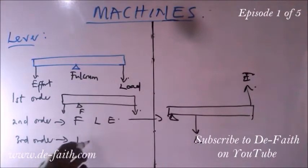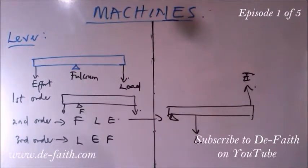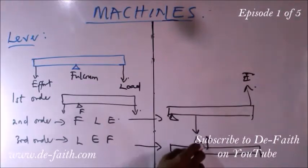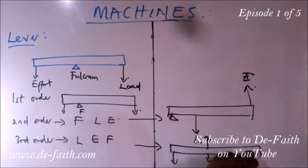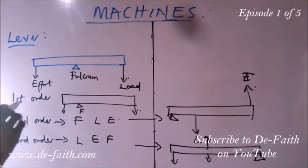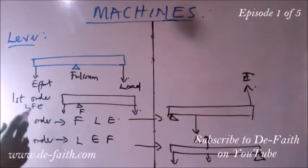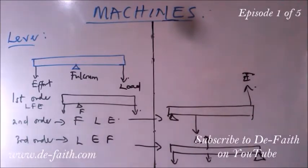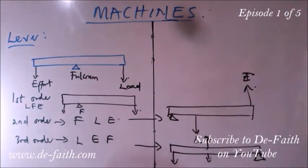In the third order lever, the arrangement is load, effort, and fulcrum, with the emphasis on the effort being at the center. The effort may act upwards or downwards, but importantly it is in the middle, with the fulcrum at the edge. In summary: first order has the fulcrum at the center, second order has the load at the center, and third order has the effort at the center. Examples of third order levers include the forearm and sugar tongs.